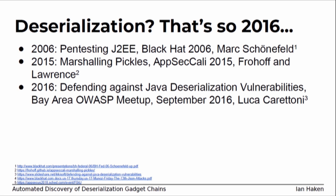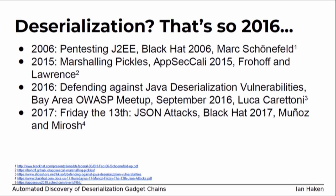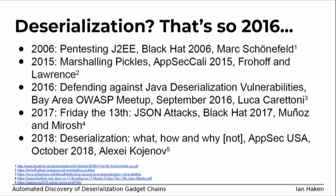My favorite talk from that year was by Luca at an OWASP meetup, where he did a great job explaining what these vulnerabilities are, what exploits look like, and how to remediate them — definitely worth checking out. More recently, at last year's Black Hat, Munoz and Marosh gave a survey of JSON parsing libraries showing how all these other libraries can also do unsafe deserialization. And in case you think that was the last talk — at AppSecUSA in October, someone's talking about deserialization vulnerabilities again, because we haven't solved this yet.